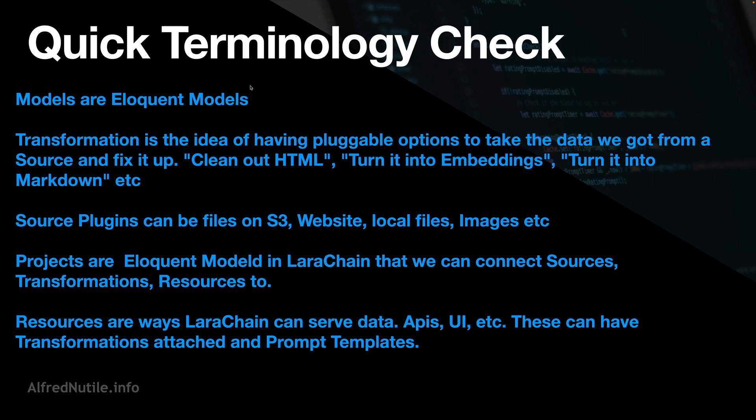Let's check in on terminology, because I'm going to say things that sound technical and they're not. When I say models, those are just Eloquent models. When I say transformations, that's just an idea — LangChain is the foundation to what I'm trying to do here. They have a Python version and I'm just trying to learn from them. These transformations or transformers take the data in and, depending on which ones you use, they can do stuff like pull HTML out of it, turn it into Markdown, or do the embedding stuff.